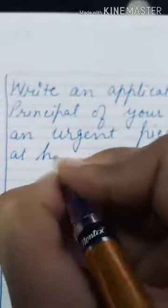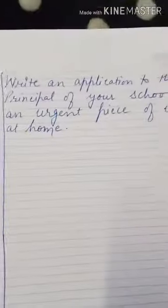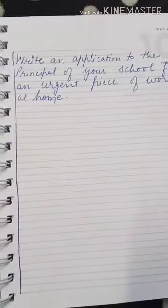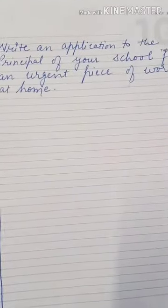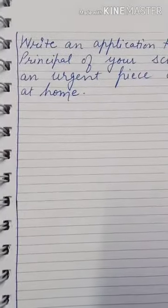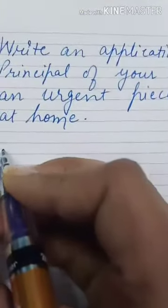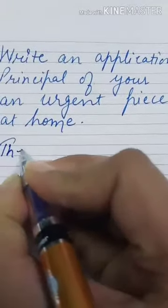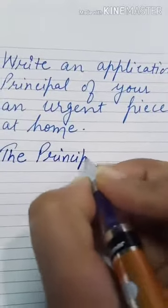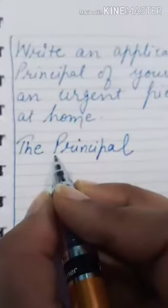Write an application to the principal of your school for an urgent piece of work at home. You have an urgent piece of work at home and you need leave, so you have to inform your principal. The receiver's address comes first — in a school, the head is the principal, so you write: To, The Principal — 'T' and 'P' should be capital.